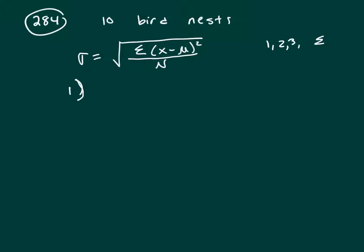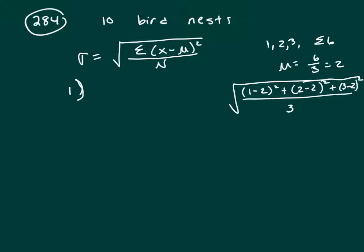The sum of those would be 6, and the mean would be 6 over 3, which is 2. So the way you would find the standard deviation, it would be the square root of the first number, which is 1 minus the mean squared, plus the next number, which is 2 minus the mean squared, plus the next number, which is 3 minus the mean squared. You do all that calculation, and then you would divide by 3, because you have 3 numbers.